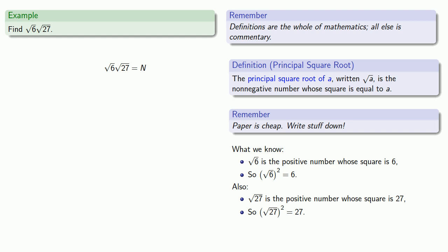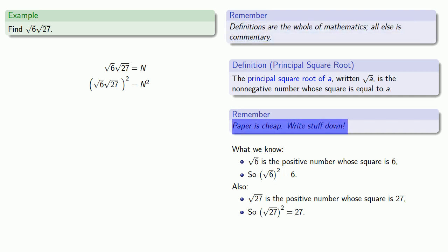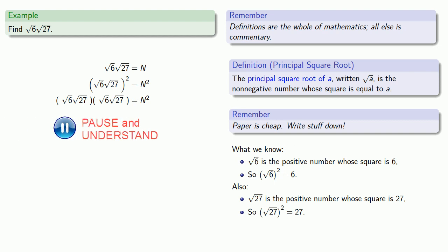So here's how we can make use of this. We have square root of 6 times square root of 27 on the left, and we know something about the squares of these square roots. So let's take our equation and square both sides. Remember, definitions are the whole of mathematics — all else is commentary — and paper is cheap. When we write square root of 6 times square root of 27, all squared, we mean we're going to take square root of 6 times square root of 27 and multiply it by itself. Because this is just multiplication, we can rearrange the factors in any order we want, so let's put the square root of 6's together and the square root of 27's together.